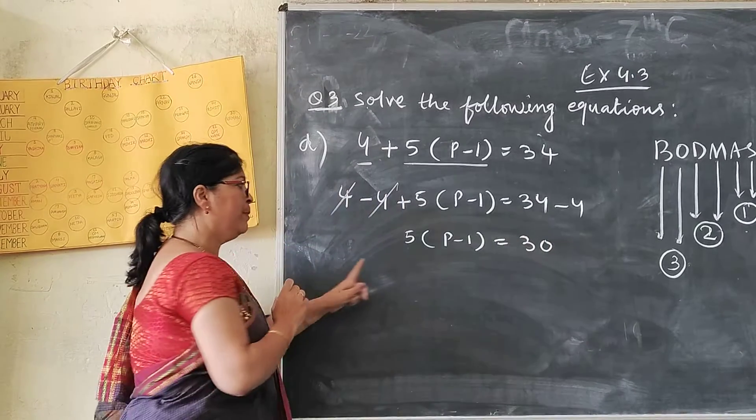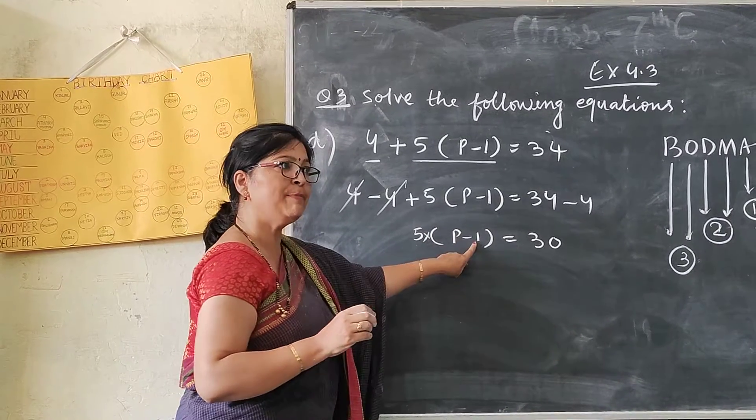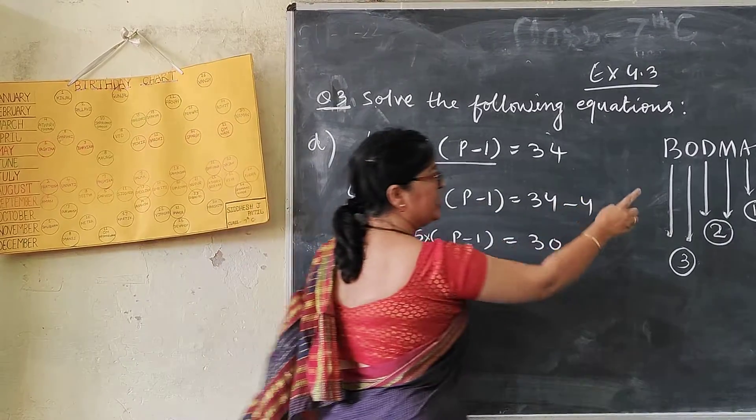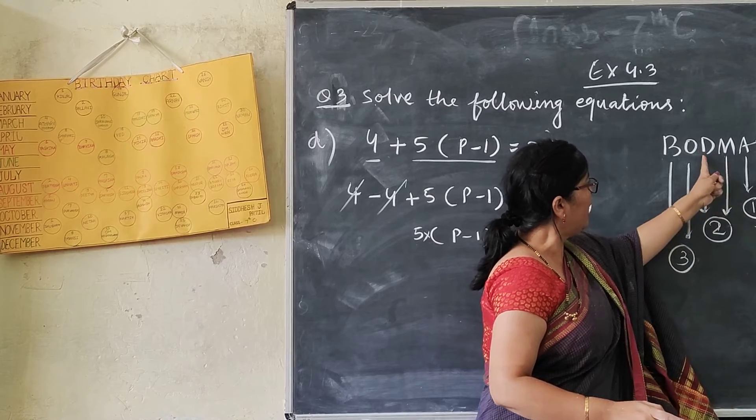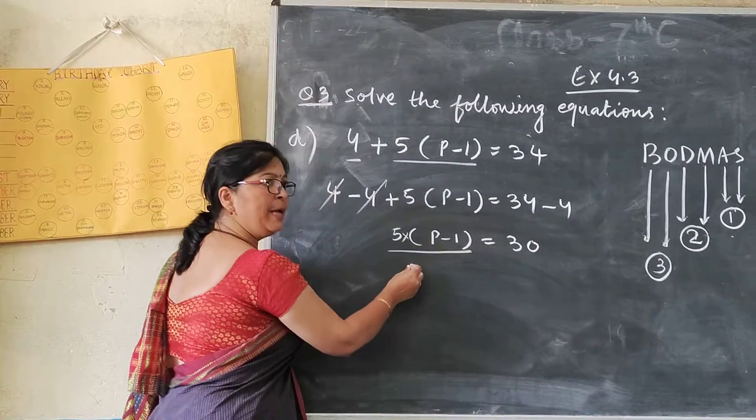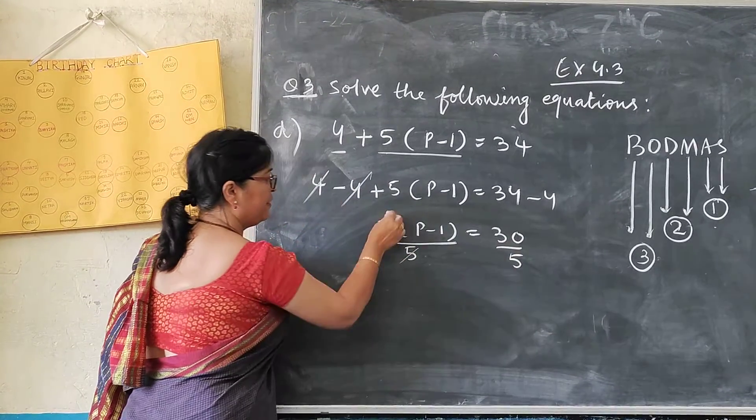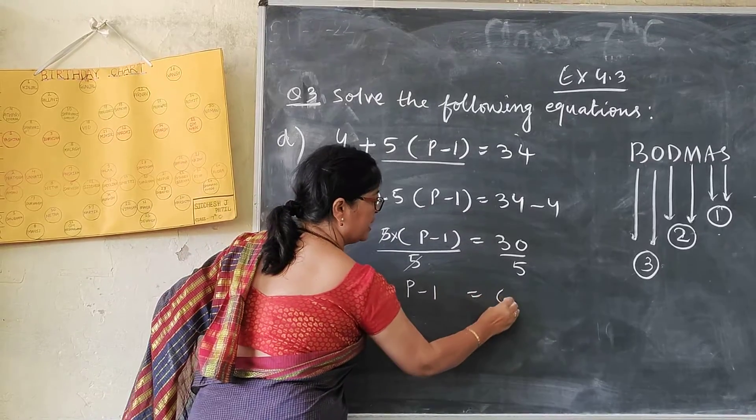Now I want to remove this number. Because here we have multiplication sign between 5 and this bracket. So after addition subtraction, multiply or division sign will be removed. So I have divided by 5. 5 cancelled. T minus 1 equals to 6.